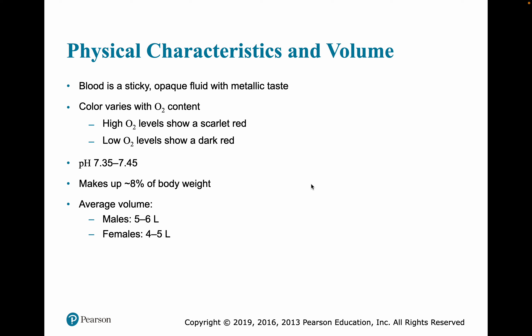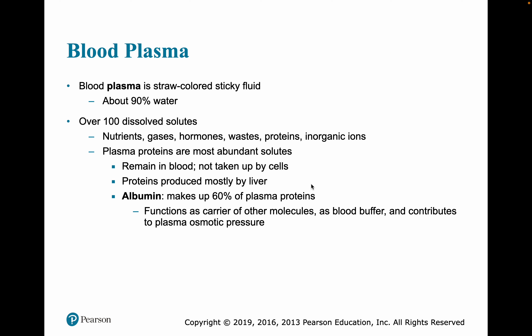Blood is a sticky, opaque fluid with a metallic taste. Its color varies with oxygen content from scarlet to dark red — there is no blue blood; it just looks blue through the skin. pH should be between 7.35 and 7.45. Blood makes up about 8% of body weight, with average volumes of 5 to 6 liters in males and 4 to 5 liters in females.